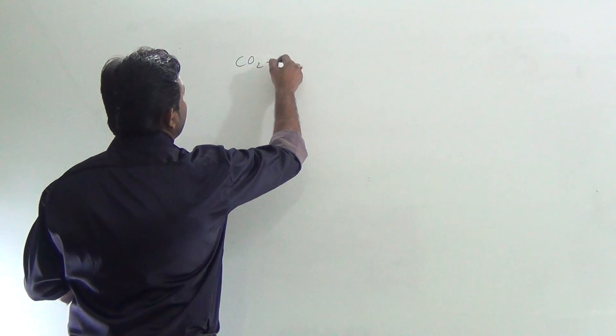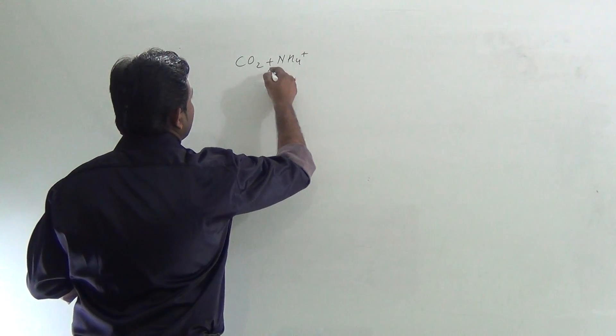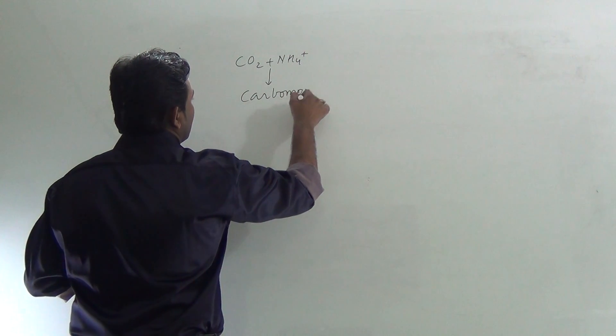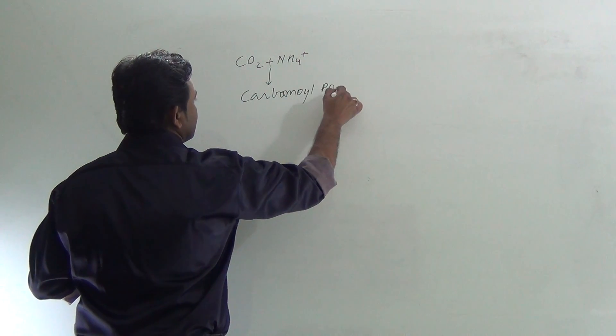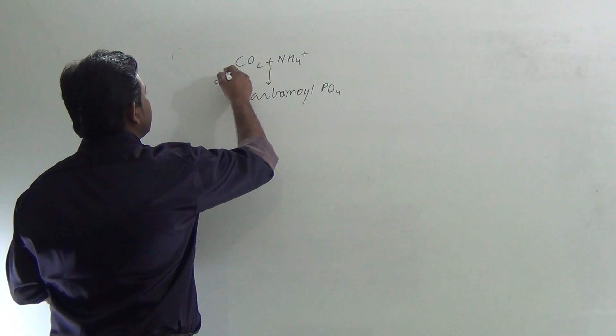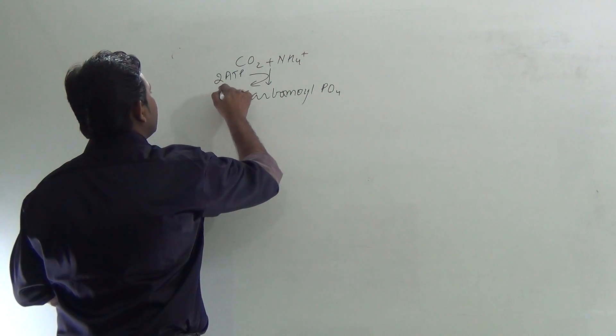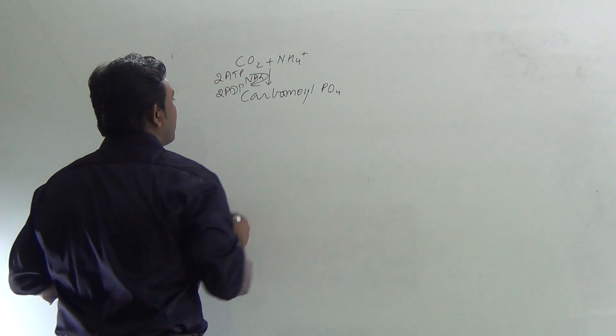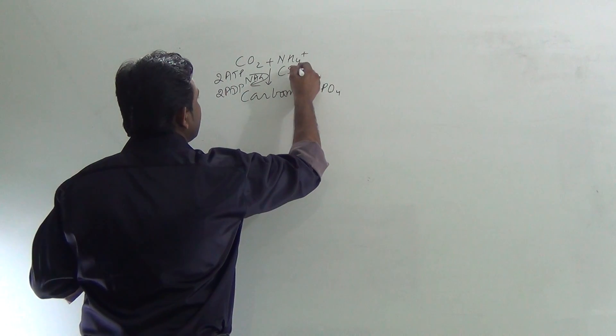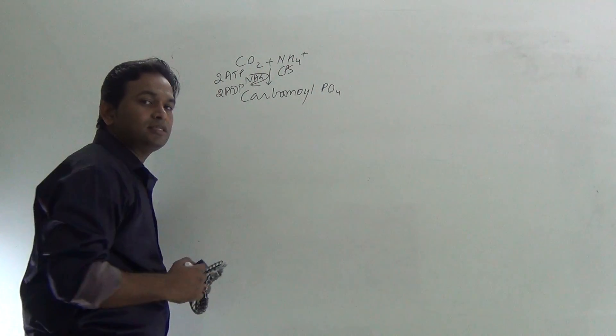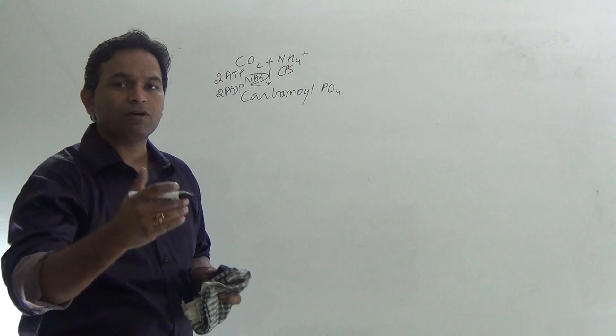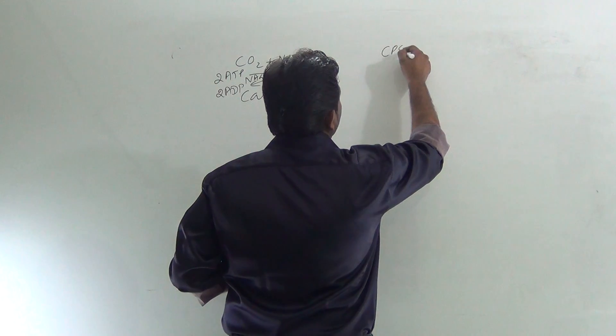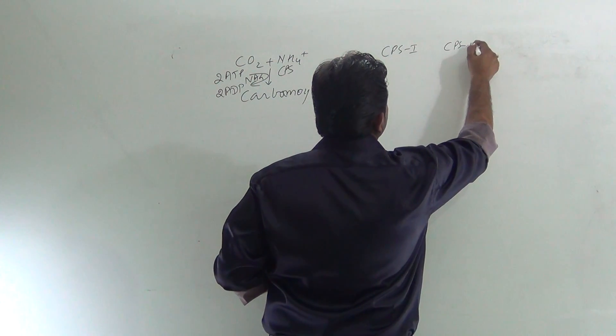CO2 and ammonia when they react form carbamoyl phosphate. During this reaction, two ATP molecules are utilized to form two ADP, and NAG is required for the action of CPS enzyme. CPS is carbamoyl phosphate synthase. CPS is of two types: CPS1 and CPS2.